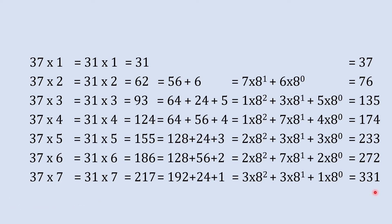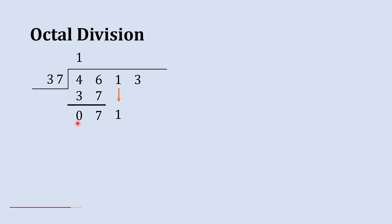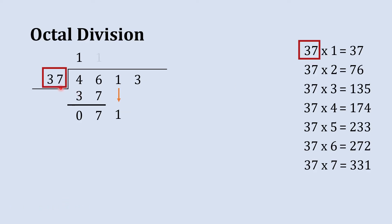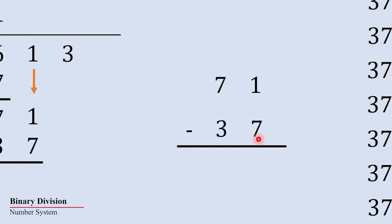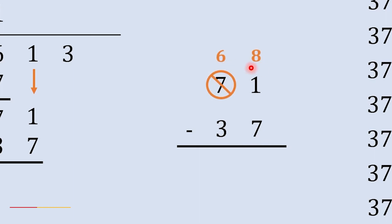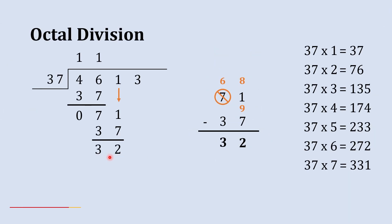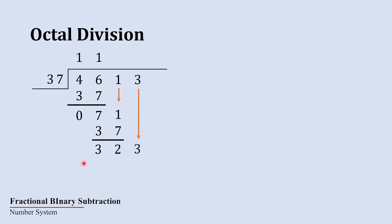Now back to our division. We have 71 and need to divide by 37. Looking at our table: 37 twos are 76, which is larger than 71, so we use 37 ones, which is 37. Subtracting 37 from 71 — we can't subtract 7 from 1, so we borrow: 8 comes here, it becomes 6. 8 + 1 = 9, so 9 minus 7 is 2, and 3 minus 6 gives 3. The subtraction result is 32.